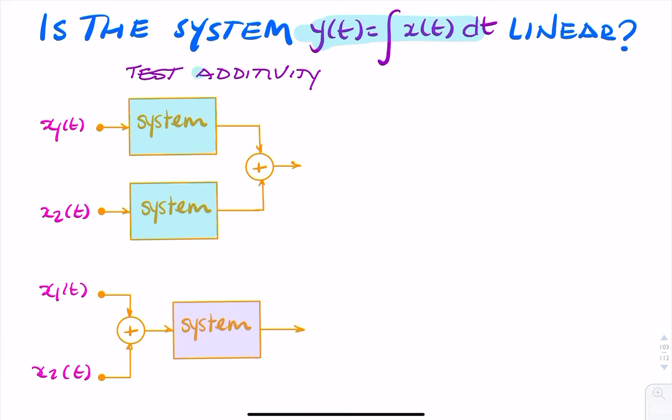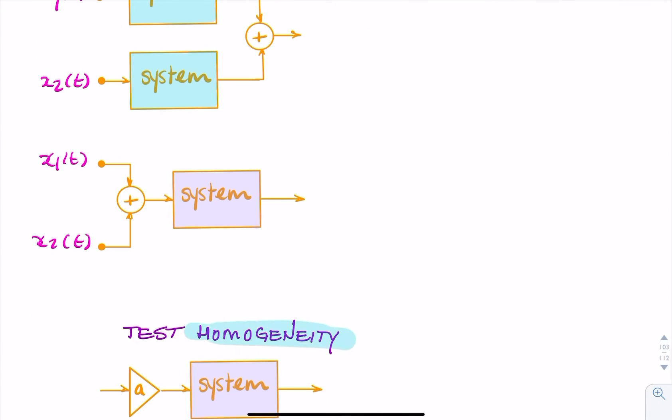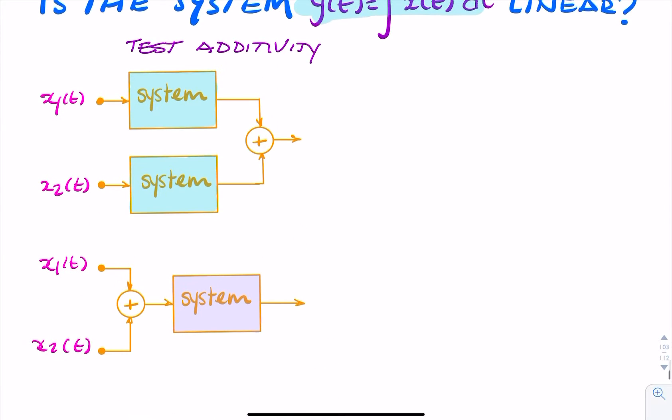And to test for linearity, we test additivity and then we test homogeneity. So let's test additivity first.